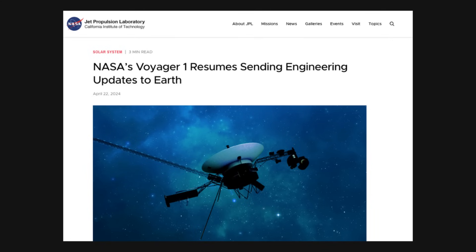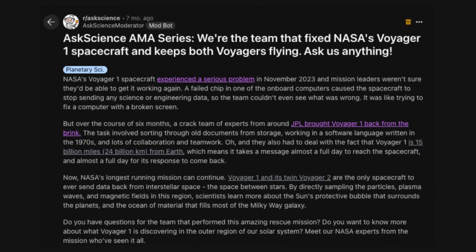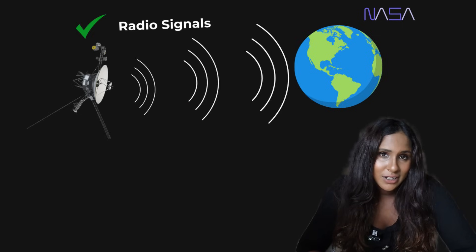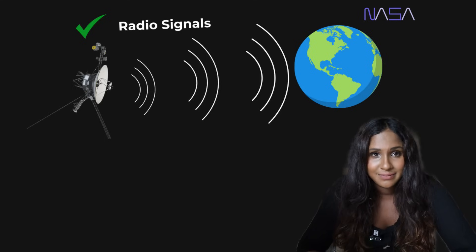But through some ingenious troubleshooting, they actually managed to bring it back online. Here's how they did it. And they described their process in a blog post on JPL, as well as a Reddit discussion. What they found was that even though Voyager 1 wasn't sending back data that they could understand, the radio signals that it transmitted were still at the right frequencies.